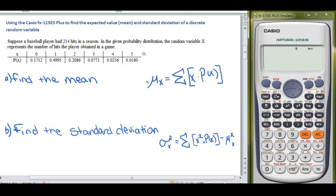To find the mean, we need to remember the formula that mu sub x equals the sum of x times p of x. For us to go through and sum up x times p of x, we would need to do 0 times 0.1712 plus 1 times 0.4995 plus 2 times 0.2086, so on and so forth through all of the variables.